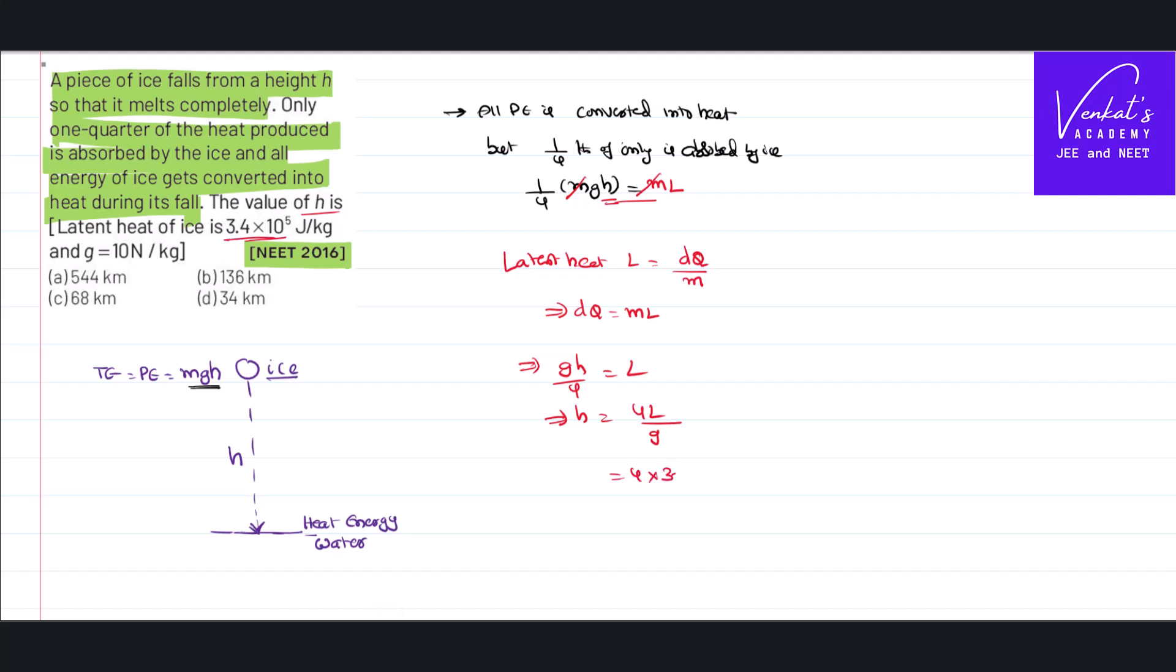Latent heat is given as 3.4 into 10 power 5. If you further write, 4 into 34 into 10 power 4, divided by g, divided by 10, so that is 4 into 34 into 10 power 3. 10 power 3 can be written as kilometers, so it is 136 kilometers.